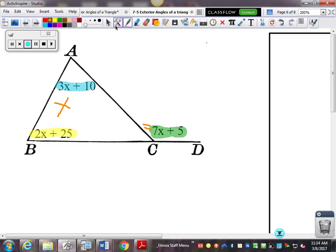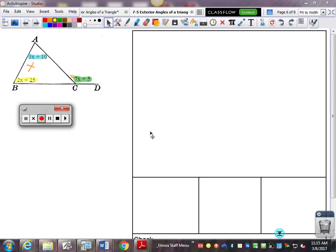So I've got 2x plus 25, it's one of my interior angles. And 3x plus 10, that's my other interior angle. And they add together to equal my exterior angle, 7x plus 5.